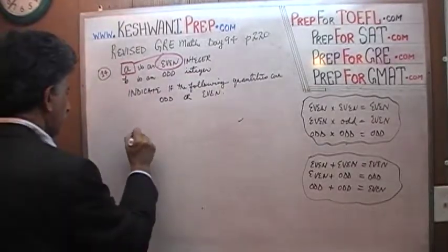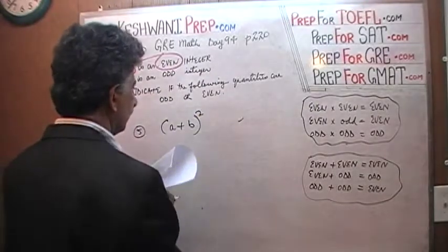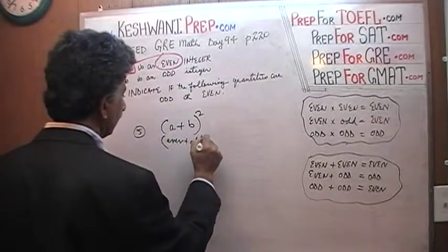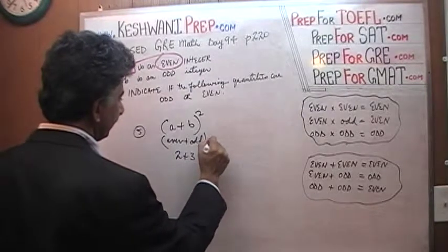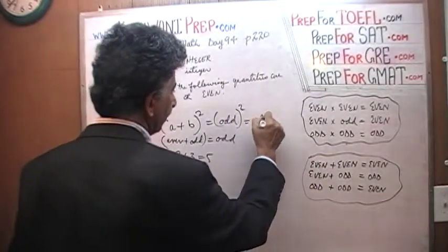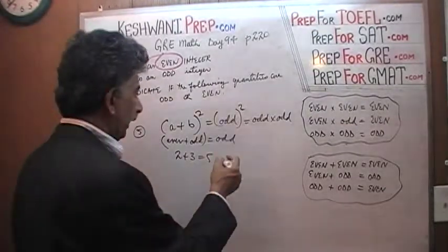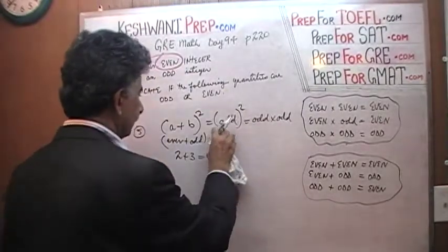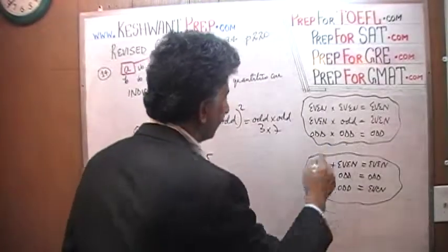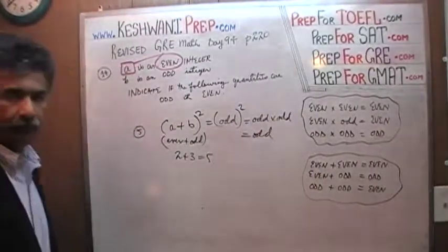Number five says a plus b, all squared. A is even, plus b which is odd. Plugging in: 2 plus 3 is 5, so the inside is an odd quantity being squared, which is the same as an odd number multiplied by itself. Odd times odd — for example, 3 times 7 is 21, which is also odd. Odd times odd is odd, so this whole entire quantity is odd.